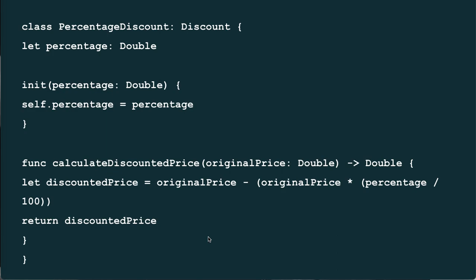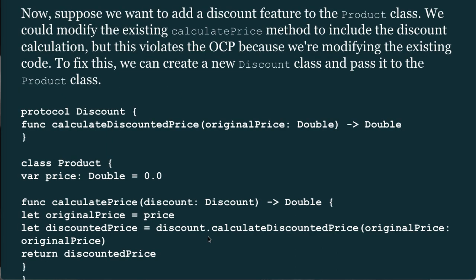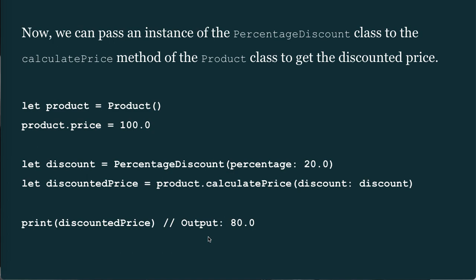We can create a PercentageDiscount class conforming to the Discount protocol: func calculateDiscountedPrice(originalPrice: Double) -> Double { let discountedPrice = originalPrice - (originalPrice * percentage / 100); return discountedPrice }. Now we can pass an instance of PercentageDiscount to the calculatePrice method: let product = Product(); product.price = 100; let discount = PercentageDiscount(percentage: 20.0); let discountedPrice = product.calculatePrice(discount: discount) // Output: 80.0.